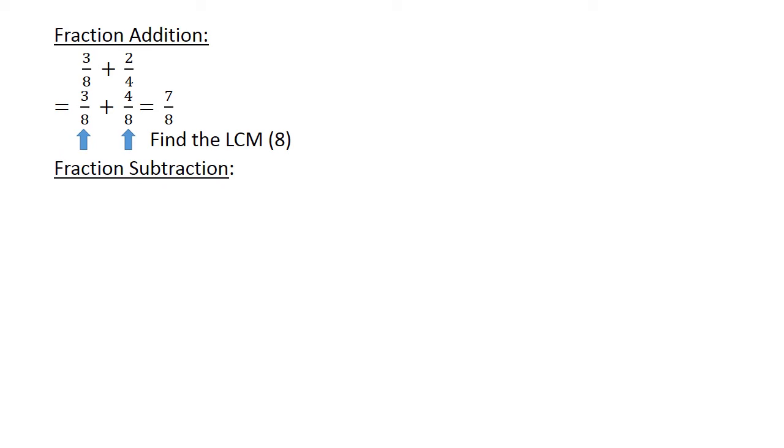Fraction subtraction. 3 over 8 minus 1 over 4 equals. Find the lowest common multiple. 3 over 8 minus 2 over 8 equals 1 over 8.